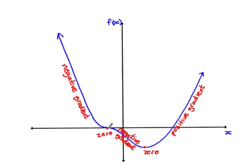So we've got negative gradient, zero, negative gradient again, zero, and positive gradient. Although this is a negative gradient, the gradient changes throughout this section. It's particularly noticeable as we approach the zero — it's still negative, but the gradient increases. Then after the horizontal point of inflection, the gradient is still negative, but we can see it's becoming steeper, meaning it's becoming more negative, i.e., decreasing.